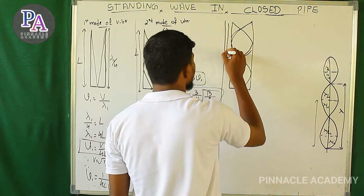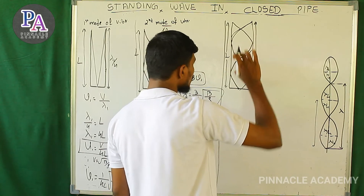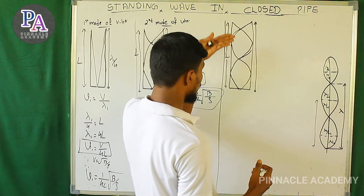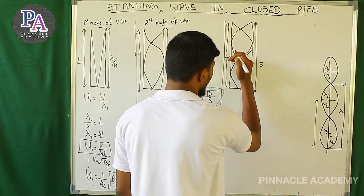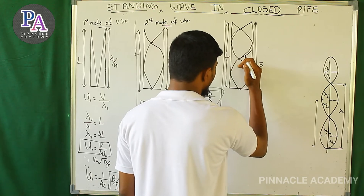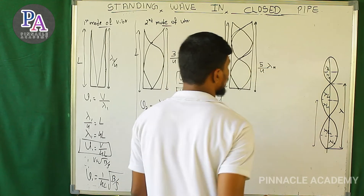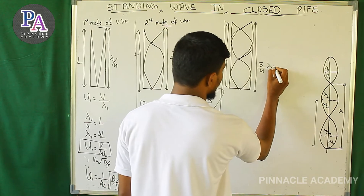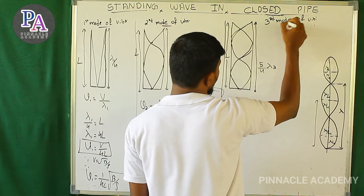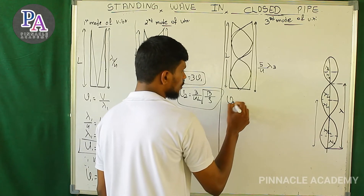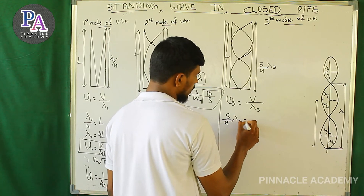For the third mode of vibration, the length L equals 5 by 4 times lambda₃. So lambda₃ equals 4L by 5. Therefore ν₃ equals v by lambda₃ equals 5v by 4L, which equals 5ν₁. This is the third harmonic frequency.